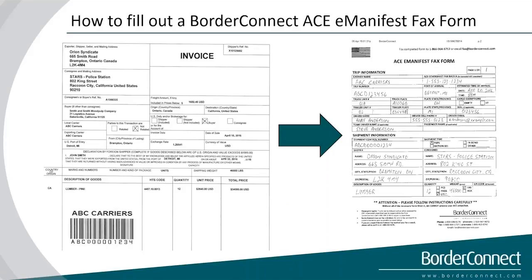Starting from the top of the AC Manifest Facts Form, the carrier name is ABC Carriers. It looks like this person wanted an ACE cover sheet fax back for a barcoded ACE cover sheet, which is convenient because once we finish processing the manifest, we're going to send a driver copy back with his ACE cover sheet. That will have a barcoded trip number on it that he can provide to the officer, who can easily scan it or key it in.